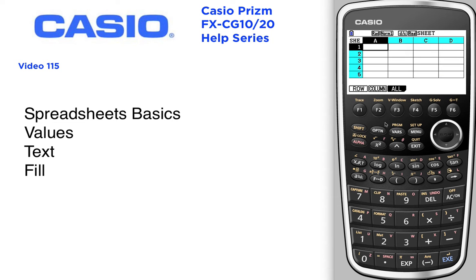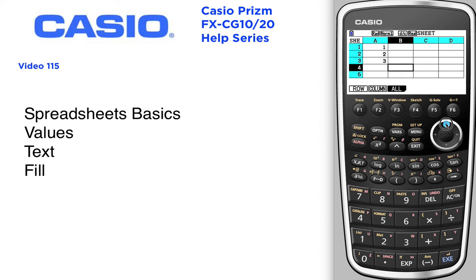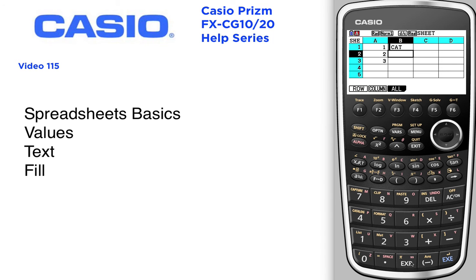To enter text or values, just type in the value you're looking to put in — in this case, one, two, and three. To enter text, you need quotes, then just type in what you want. For example, type in the words cat and dog. You need to have the quotes.